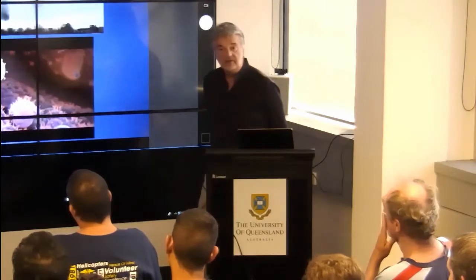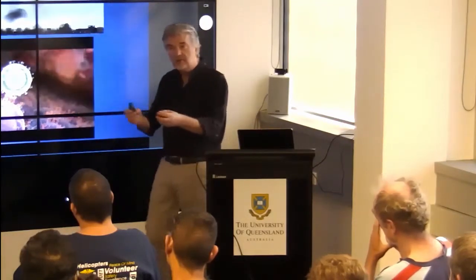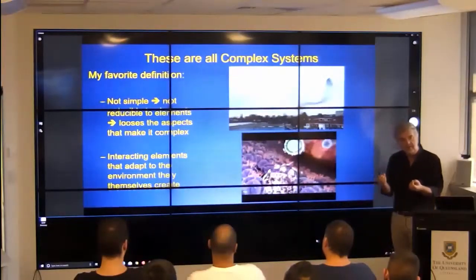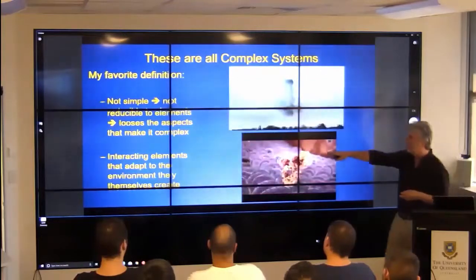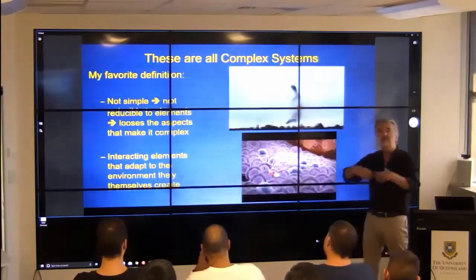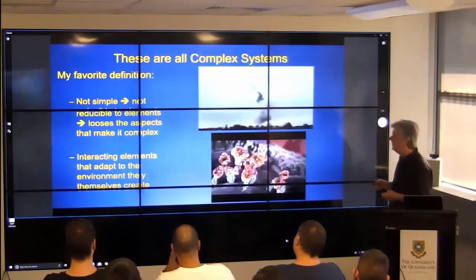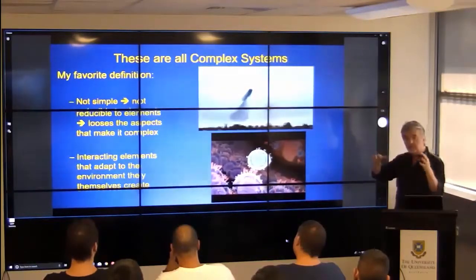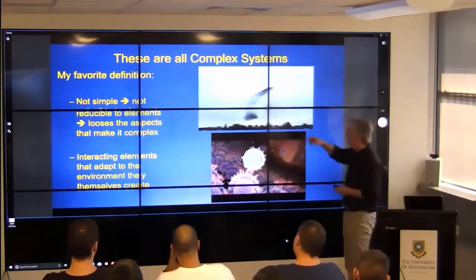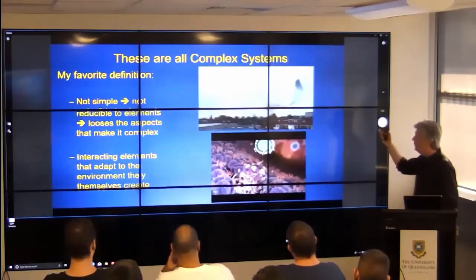There are many definitions around, but the two I like to use are: first, it's obviously not simple, and the moment you try to take it apart, you actually lose what you're looking for — which is a very nice and accurate description we can quantify. The other is that it consists of interacting elements that adapt to the environment that they create, giving you a kind of circular causality in the system. The two examples here: the famous flock of birds, where you have these beautiful macroscopic patterns, somehow they stick together with no central control — an emergent property of the local rules that birds have.